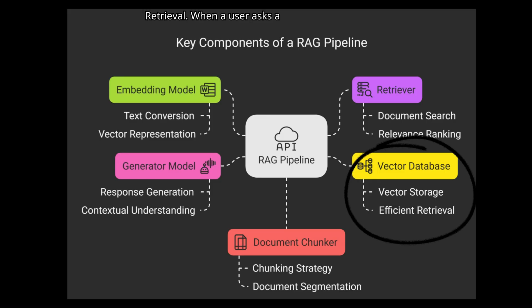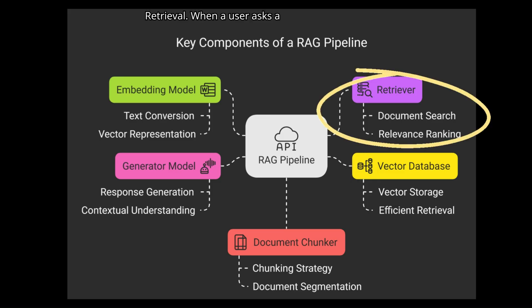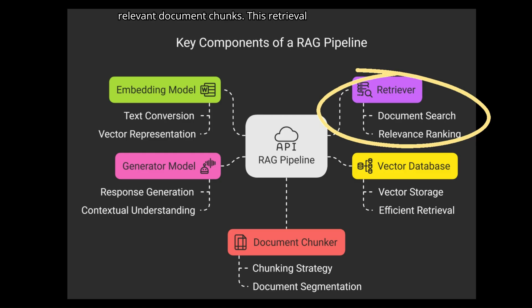Step 4 is the Retriever. When a user asks a question, we embed the query and search the vector database to retrieve the most relevant document chunks. This retrieval step ensures the LLM gets only focused, high-quality context.